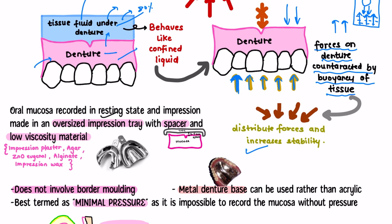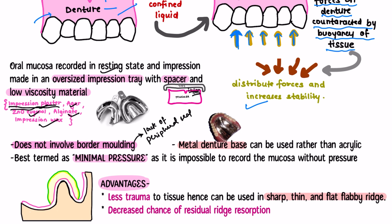In this theory, since the impression is recorded in the resting state, it is made in an oversized impression tray which has spaces so that when you pour the cast, there is proper space and the denture does not apply pressure on the tissue. It is made with low viscosity materials like impression plaster, agar, zinc oxide eugenol, alginate, or impression wax. The material of choice is impression plaster. The space between the mucosa and the tray is three to five millimeters. Border molding is not done, due to which the flanges are usually shorter.